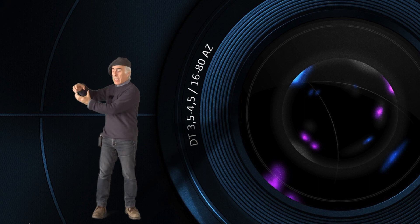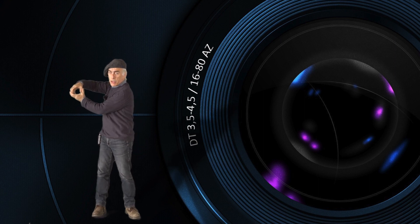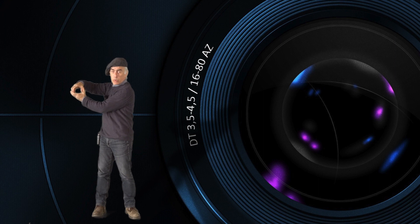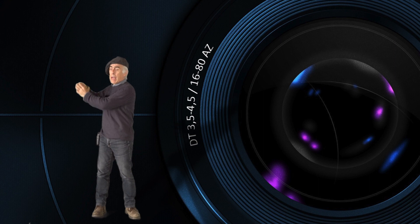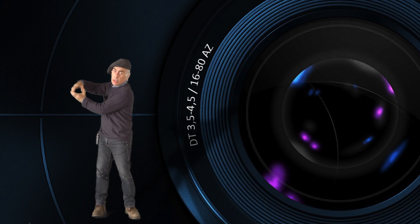However, we also have discussed the maximum permissible circle of confusion. This was how big can this dish be for objects that are not in your focus plane, objects that you have not focused on that are a bit further away or closer by. That spot on your sensor cannot become bigger than 30 micrometer. If it becomes bigger, we won't see these objects as sharp anymore.